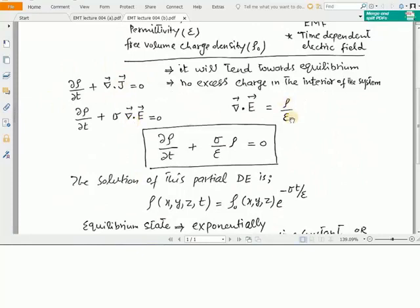We know about the current density equation; we can replace J, and here del dot E is expressed as rho over epsilon, meaning that the divergence of the electric field is not equal to zero. Using this equation we have partial rho over partial t plus sigma over epsilon into rho equals zero.